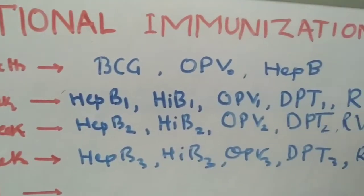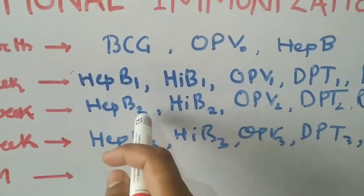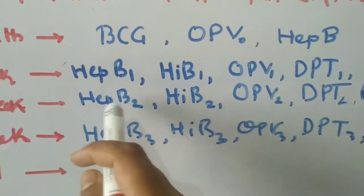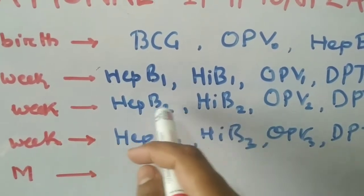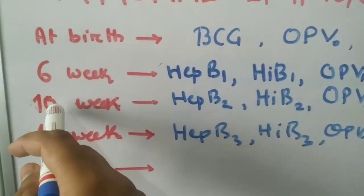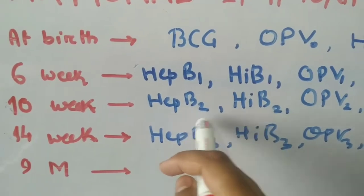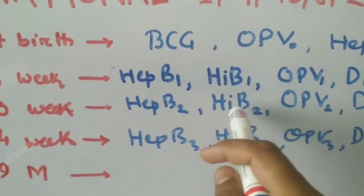Up to Rotavirus 1, the same vaccines second dose are at 10th week, that is HOD READS. The mnemonic for 10th week: second dose will come - Hepatitis B2, Haemophilus Influenzae B2, OPV2, DPT2, Rotavirus 2.